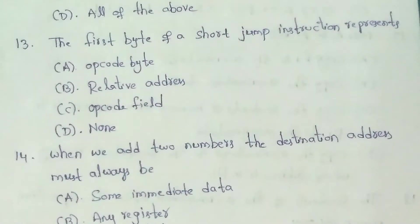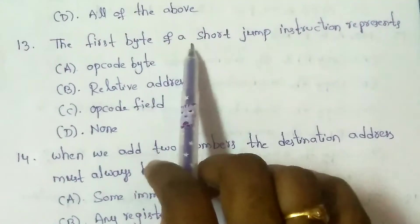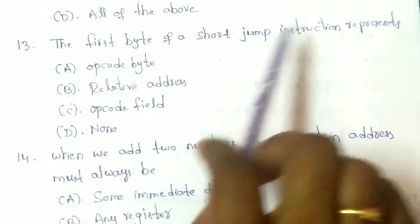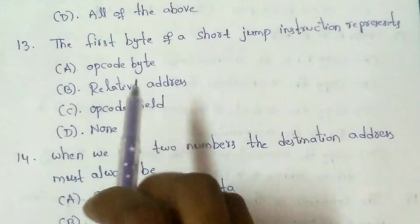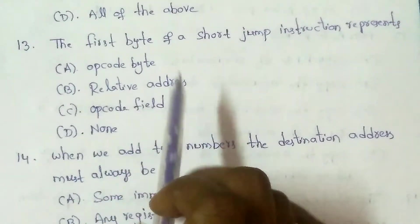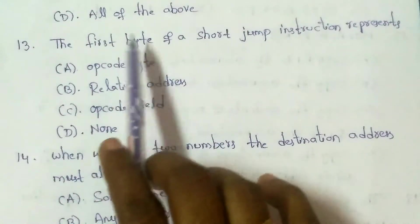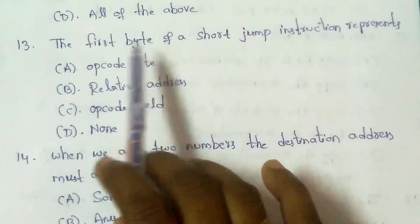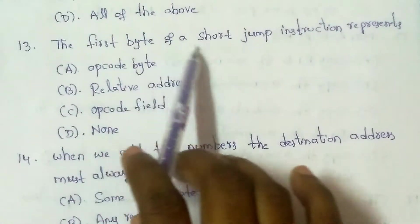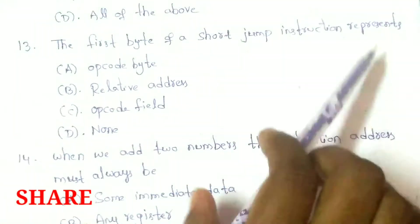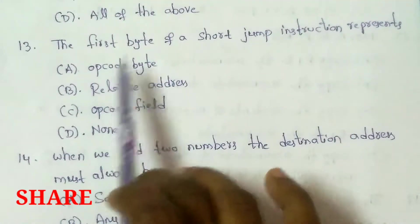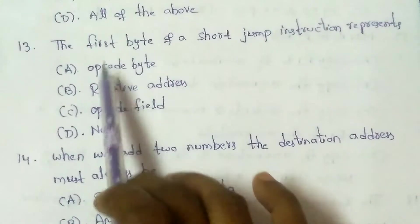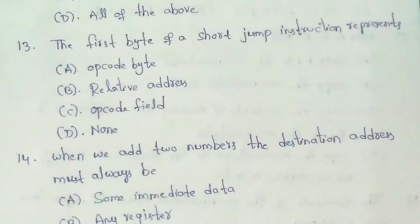Next question: The first byte of a short jump instruction represents what? A short jump is a two-byte instruction. The first byte represents the opcode, and the second byte represents the offset or code byte displacement.